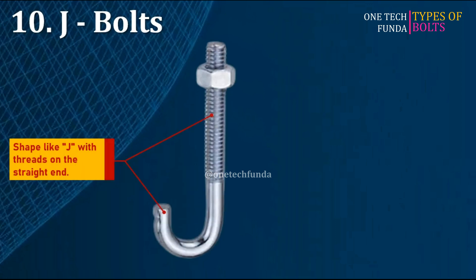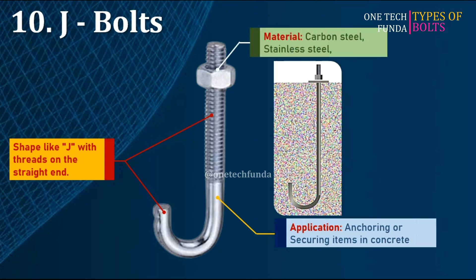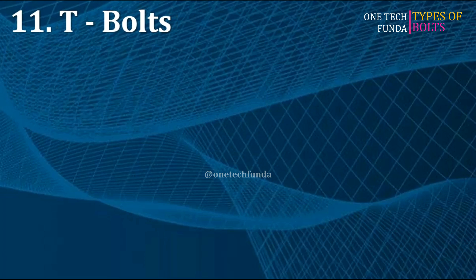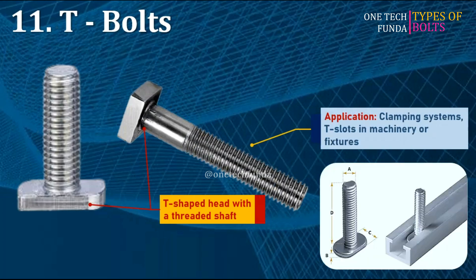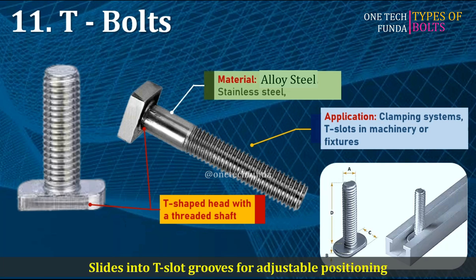T-bolts have a T-shaped head with a threaded shaft, designed to fit into a T-slot track. Commonly used in clamping systems and T-slots in machinery or fixtures. Materials include alloy steel and stainless steel. The main advantage is they slide into T-slot grooves for adjustable positioning.